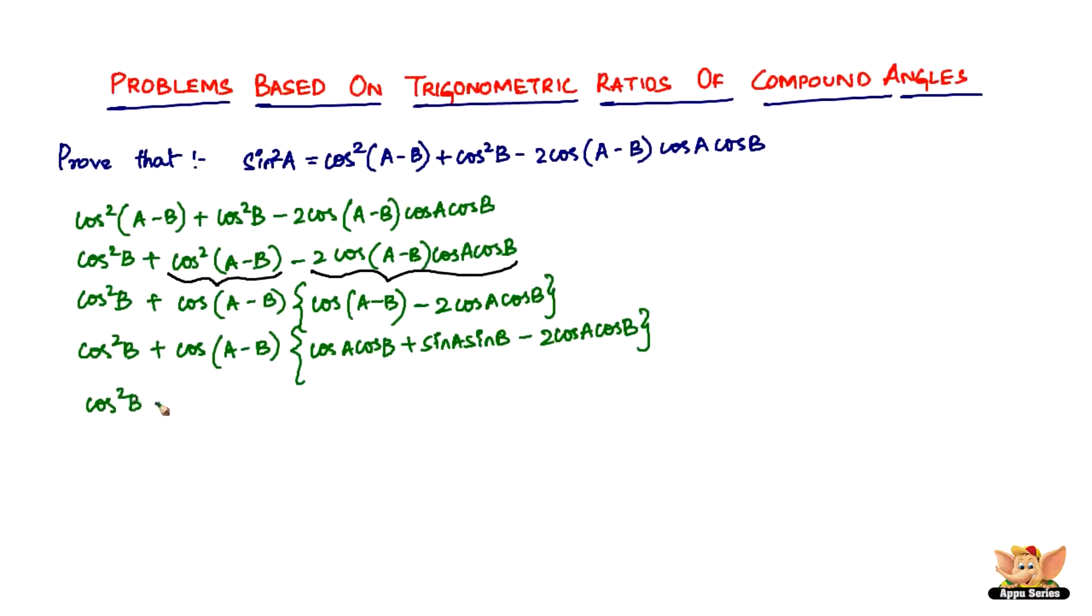So what we'll get is cos²B plus cos(A-B). And then one gets subtracted, so you have sinAsinB minus cosAcosB. Minus 2cosAcosB plus cosAcosB is going to give you minus cosAcosB.